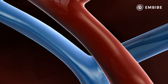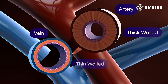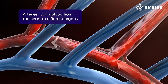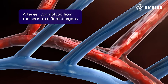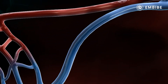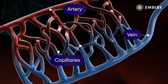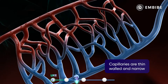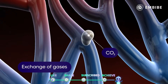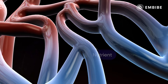The blood vessels are of three types: the arteries, which are thick-walled; the veins, which are thin-walled; and the capillaries. The arteries carry blood from the heart to different organs, and the veins carry blood from the different organs to the heart. Capillaries are the blood vessels present at the terminals of arteries and veins. These capillaries are extremely thin-walled and narrow, and it is through them that the exchange of gases, wastes, and nutrients takes place.